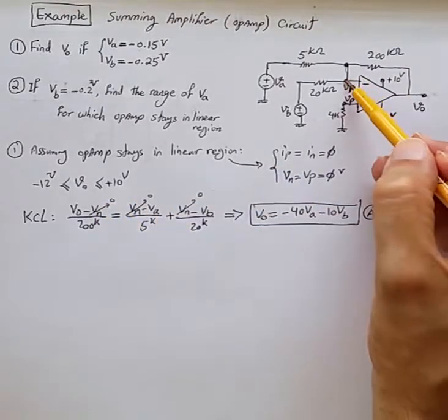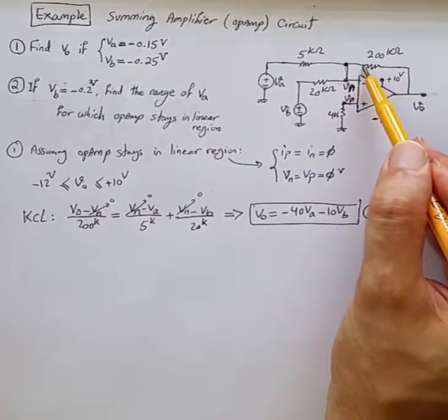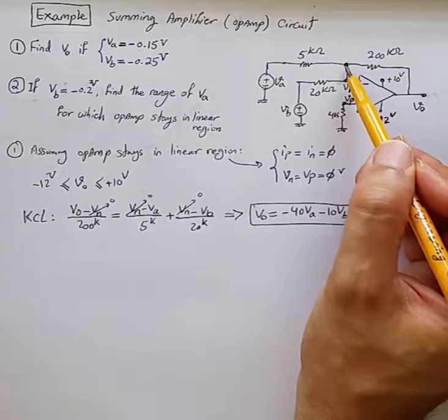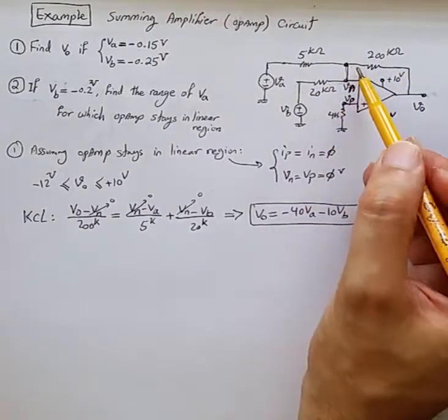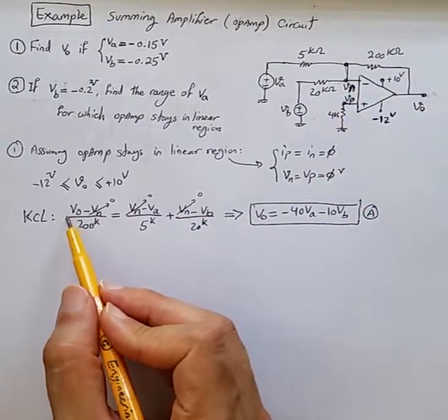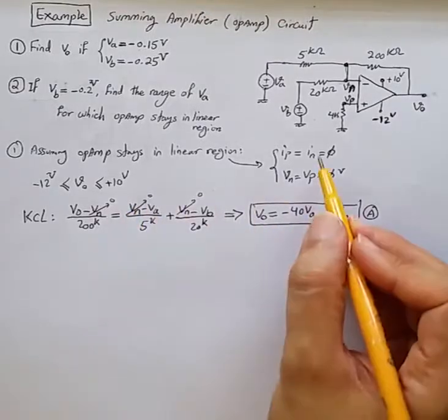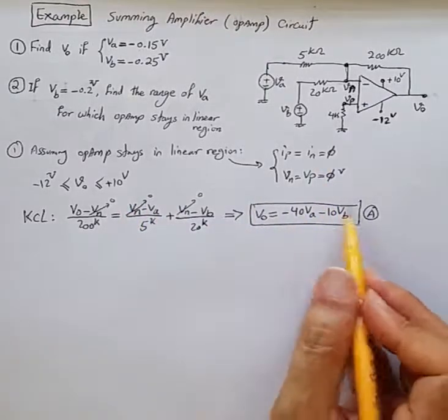And we are going to write down KCL for this node. So we are saying the current flowing through the 200K resistor should be equal to the current flowing through the 5K and the current flowing through the 20K. That's why we have written this KCL. And from this, given that VN is 0, we get this outcome.